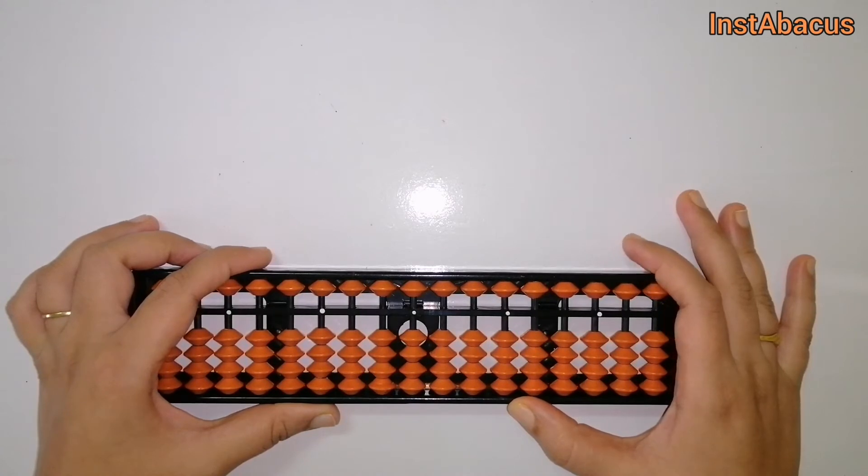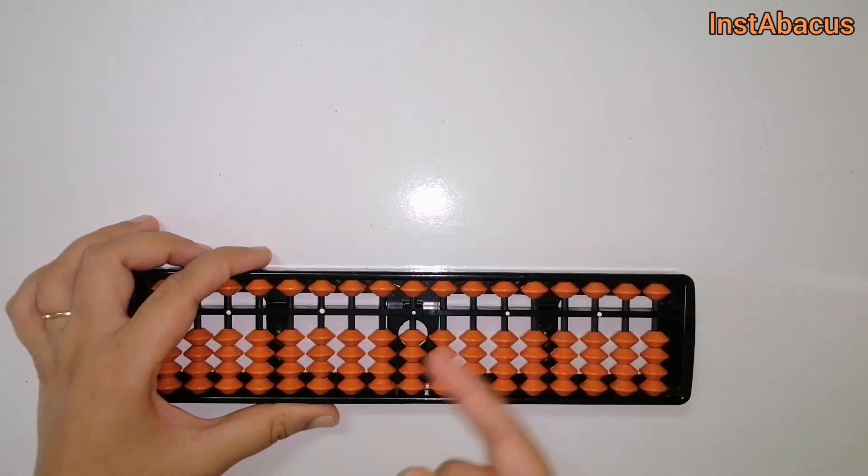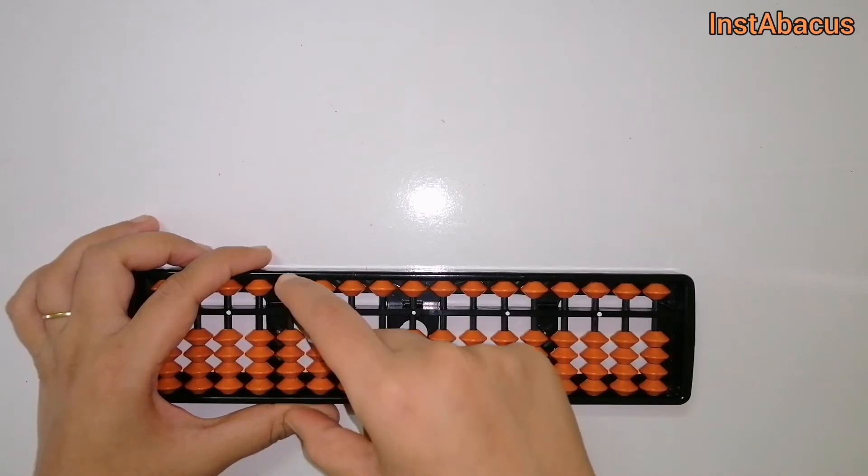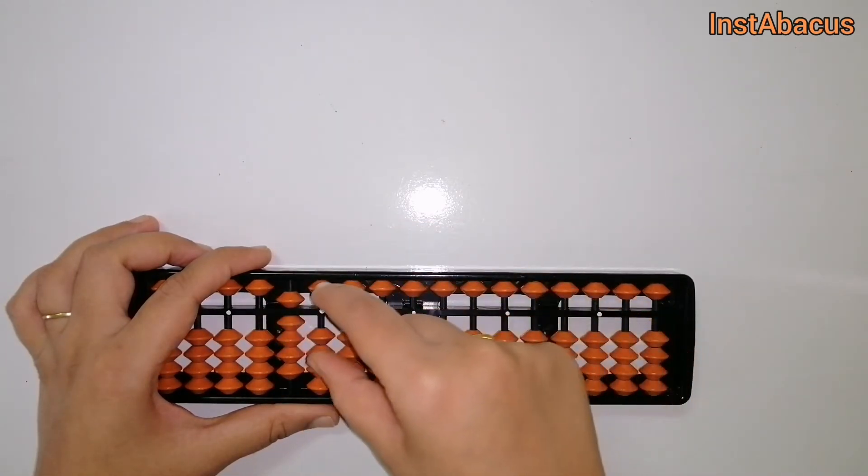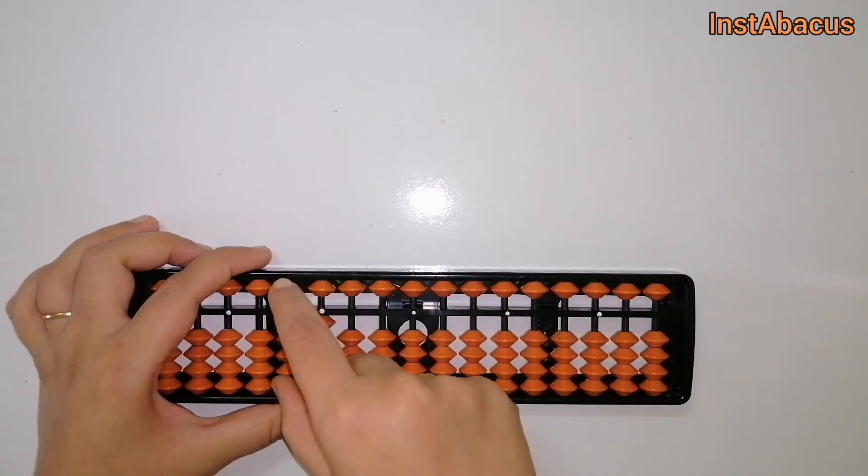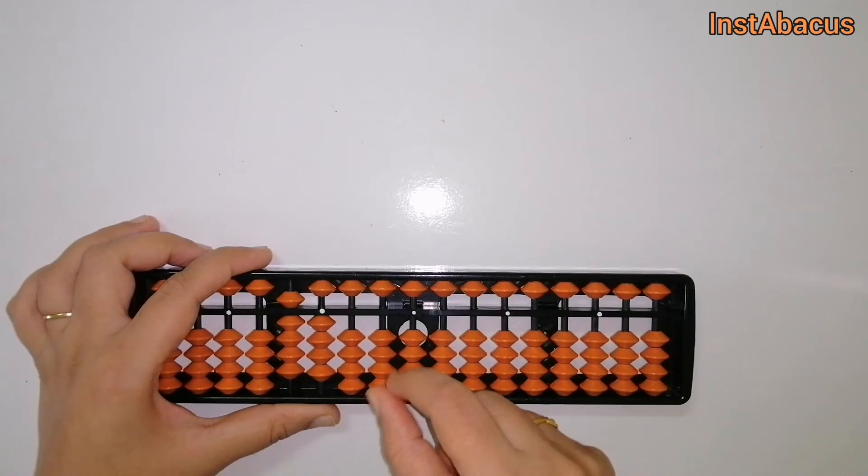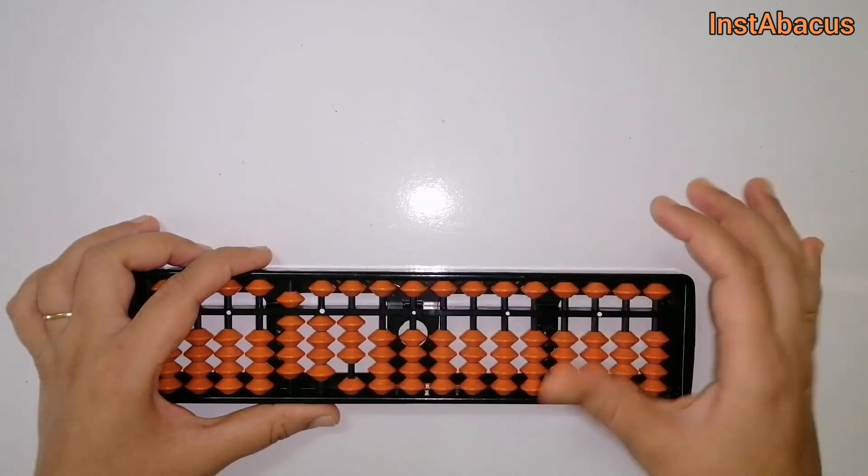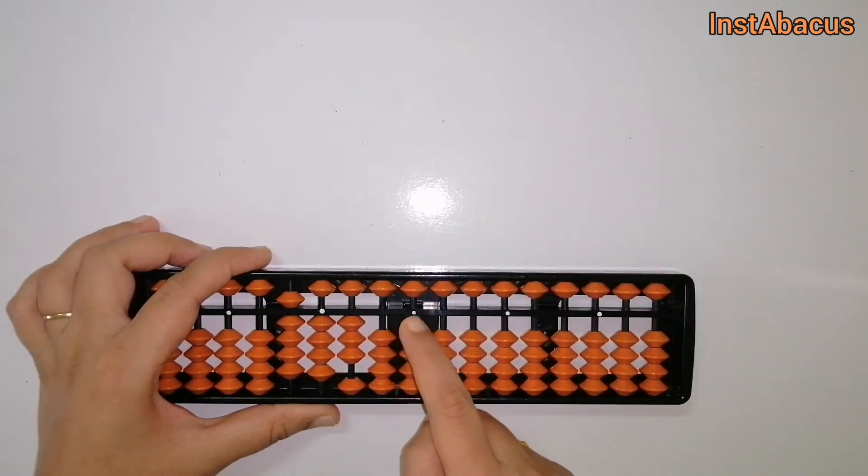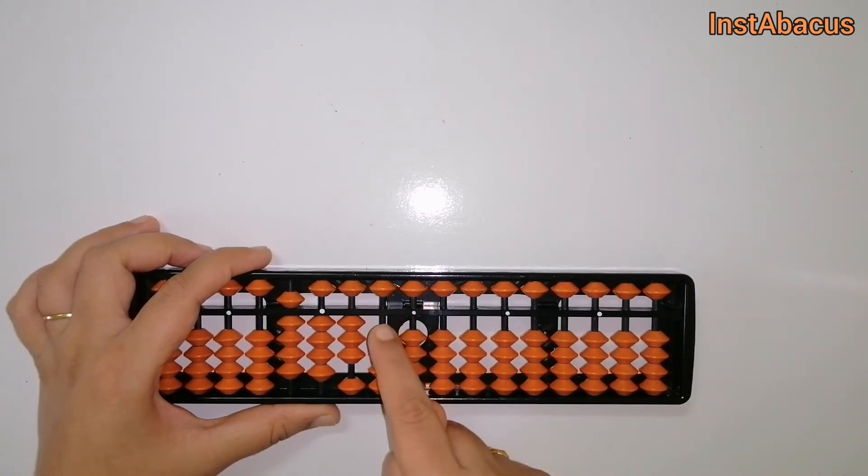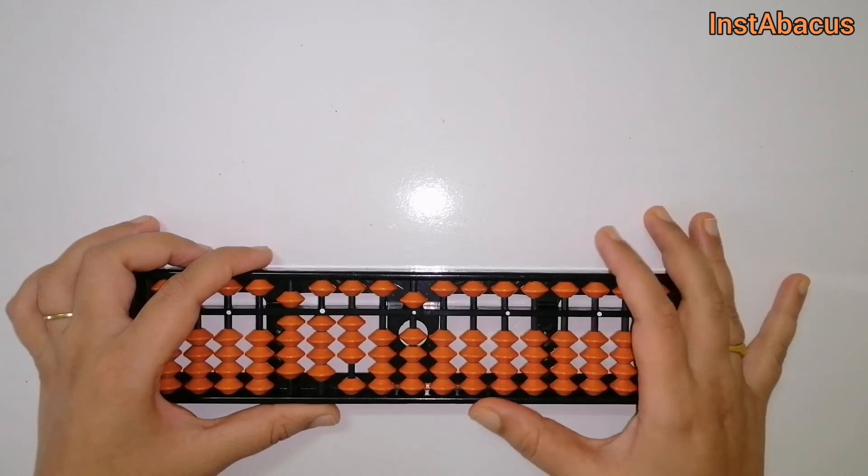For 94,305, again we have to jump up to the ten thousands place. 9 here, 4 here - that's 94,000. Then 3 hundred and 5. In this case, nothing will move here as there's zero. And 305. There we go. 94,305.